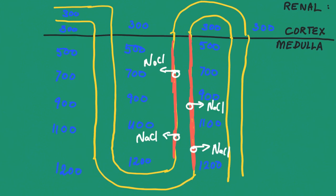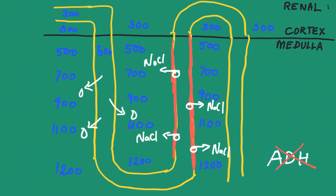Let's take a look at what happens on a cold day when the level of ADH is very low or ADH is not even present. We'll start again at the PCT, where the osmolarity is 300. As the tubular fluid comes down the descending limb of the nephron loop, water is reabsorbed. As the water is reabsorbed, the osmolarity inside the tube changes: 500, 700, 900, 1100, and 1200 — exactly as we did previously.